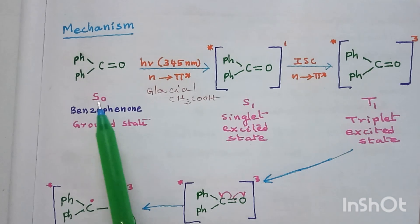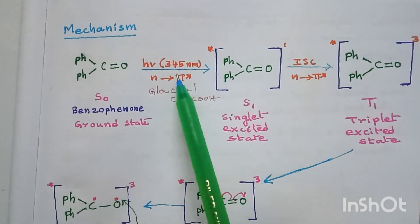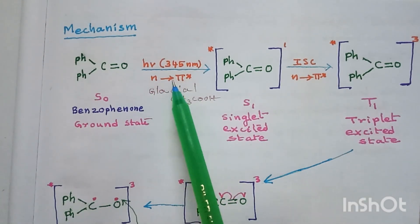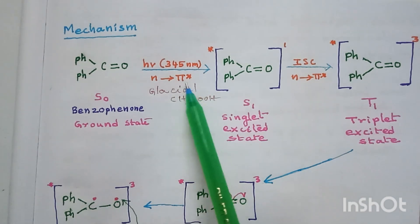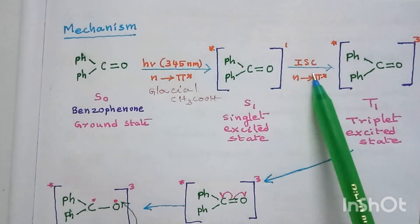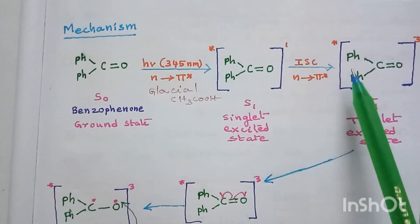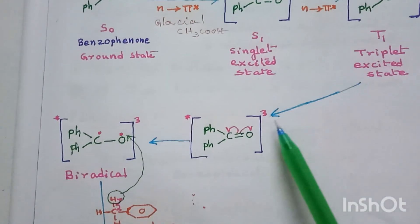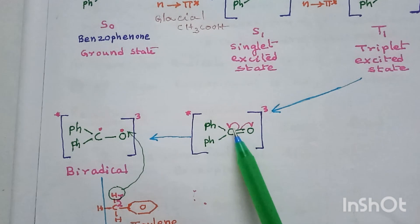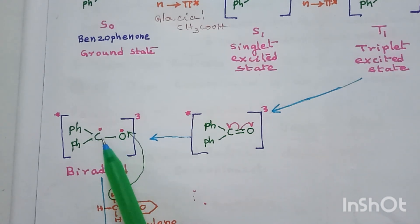Benzophenone in ground state S0, when irradiated by UV light of 345 nanometers range, gets excited via n to π* transition and enters singlet excited state S1. From S1, it enters triplet excited state T1 through inter-system crossing (ISC). In the triplet excited state, the π bond between carbon and oxygen breaks homolytically to give a biradical: Ph₂C• and •O radical.